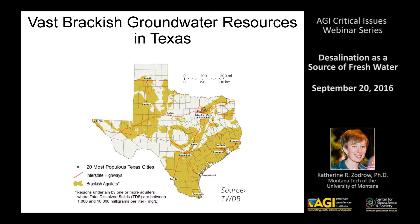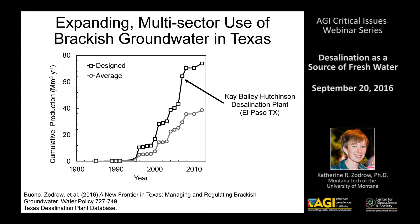Texas faces a gap between water supply and demand that is only expected to grow into the future. So the question is: how do we use this brackish groundwater in an economic way and how can we incentivize its use? Brackish desalination has been growing — desalination in Texas in general has been growing, and most of that is brackish groundwater desalination.